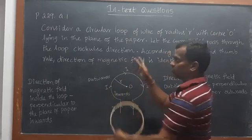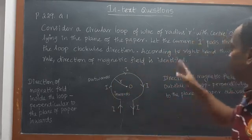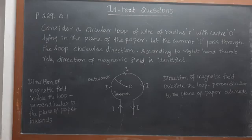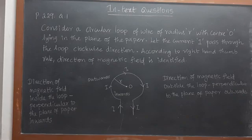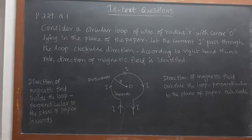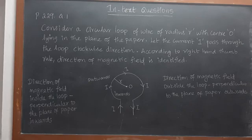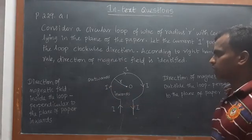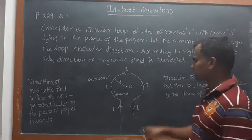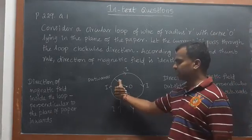So here I wrote, considering a circular loop of radius R with the center O, lying in the plane of the paper, where the current I pass through the loop clockwise direction. According to right-hand thumb rule, the direction of magnetic field is identified. So the direction of magnetic field inside the loop perpendicular to the plane of paper inwards, coming inwards.